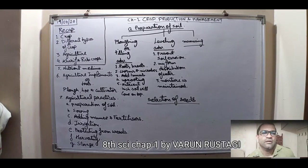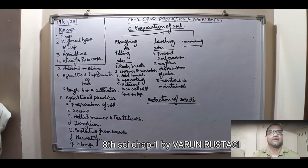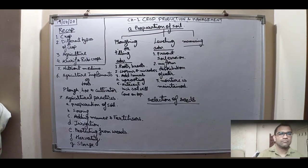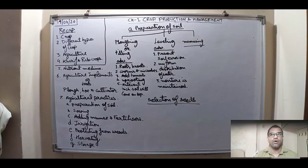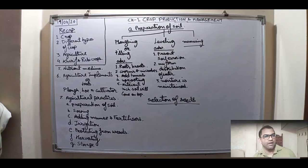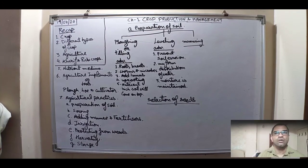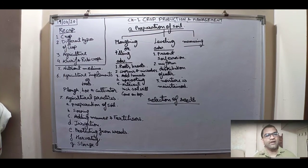Good morning everybody. We are continuing with the same chapter, that is the first chapter: Crop Production and Management. First, we are going to have a recap of what we have done previously. A crop means growing the same kind of plant on the same field on a large scale.